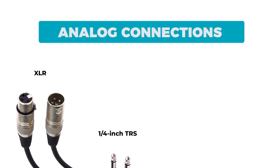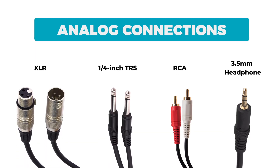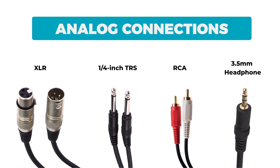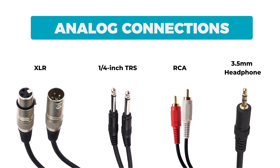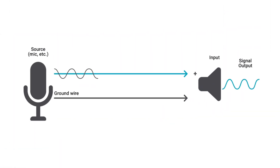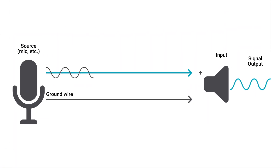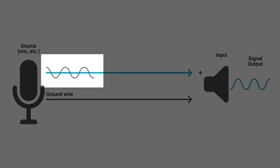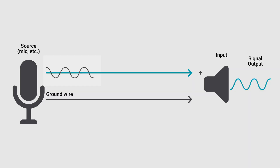First, there's analog connections. This includes cables like XLR, quarter-inch, RCA, or even your basic headphone cable. Analog cables carry a continuous electrical signal — the voltage of that electrical signal essentially fluctuates in correlation with the audio signal it's carrying.